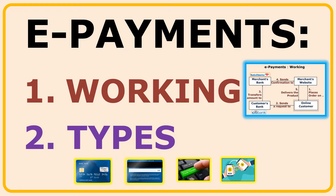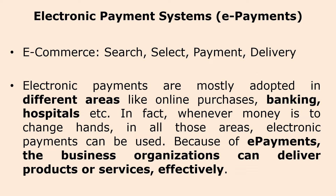Let us understand e-payments, also known as electronic payments, their working mechanism and different types of e-payments. When it comes to e-commerce, people look for a required product, that is searching for the product, select the required product and make the payment. People transfer the amount electronically, that is the reason why it is known as an electronic payment system, because once the amount is received, the seller delivers the product. So e-commerce is nothing but buying or selling products or services over the internet.